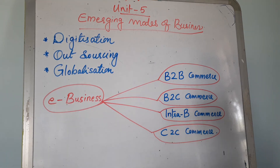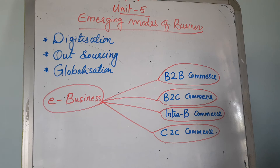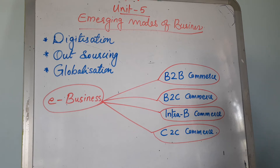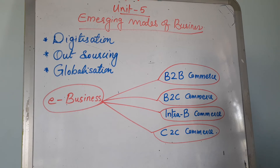There are four types in e-business: B2B commerce, B2C commerce, Intra-B commerce, and C2C commerce. B2B means business to business — both parties involved in e-commerce transactions are business firms. The term e-commerce originally meant facilitating B2B transactions using Electronic Data Interchange, known as EDI, which is a technology to send and receive commercial documents like purchase orders or invoices.